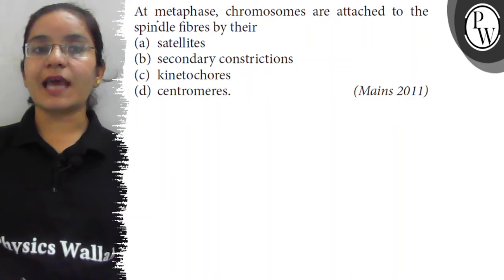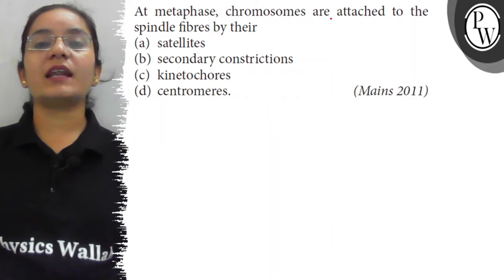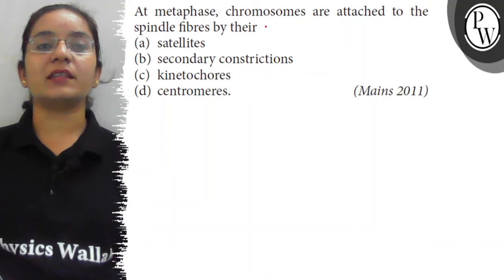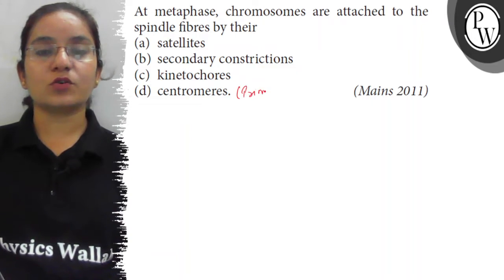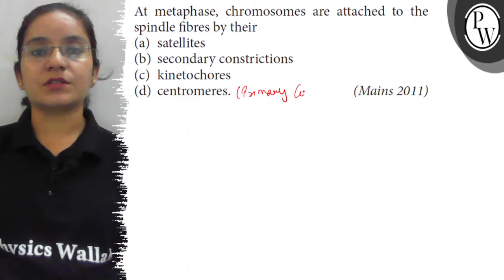Hello students, the question is: at metaphase, the chromosomes are attached to the spindle fibers by their (a) satellites, (b) secondary constriction, (c) kinetochore, (d) centromeres. First of all, the centromere is also known as primary constriction.